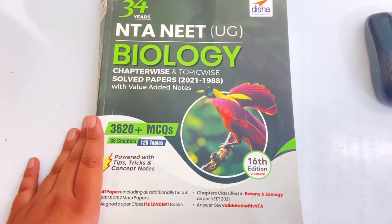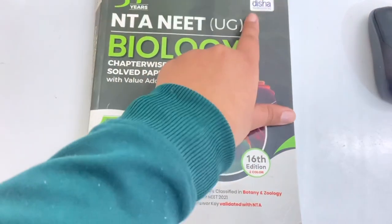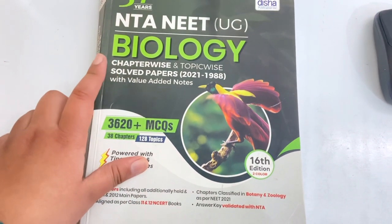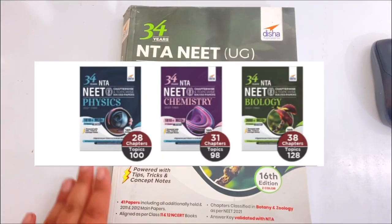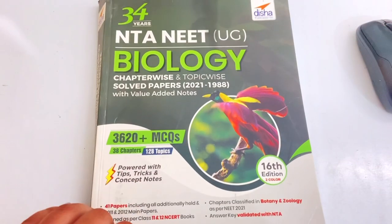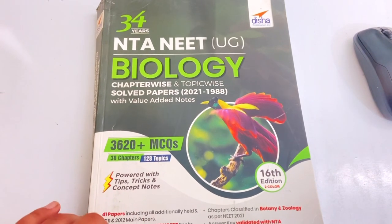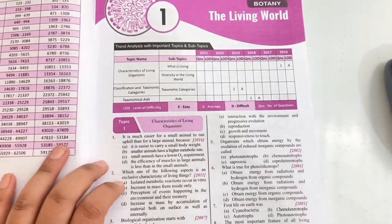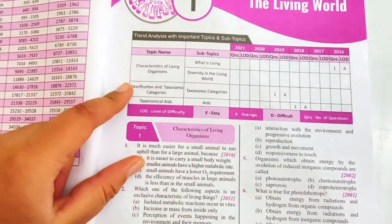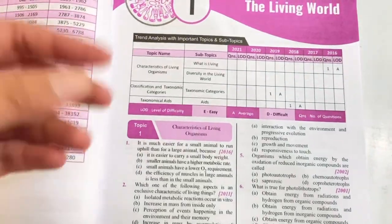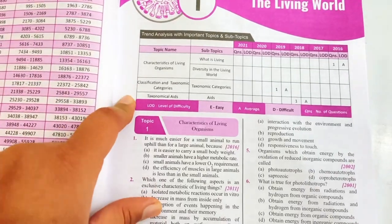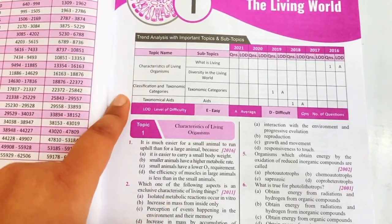Here I want to talk about previous 34 years NEET Huge Question book from Disha Publications. This book contains previous questions which are given in chapter-wise and topic-wise format. I have this one in biology but this comes in all three subjects which is physics, chemistry, and bio. This book also covers seven additional papers which are missing in other books. If I take a random chapter, say the living world, firstly a trend analysis table is given which will help you to know from which topic questions have been asked in previous years, what was the level of difficulty, and how many questions have been asked.